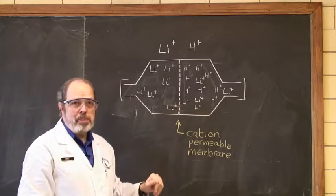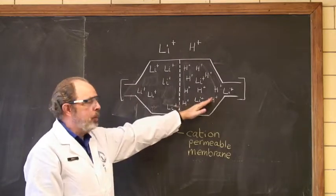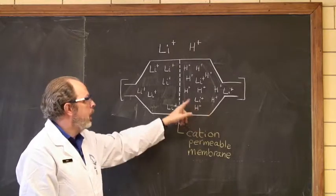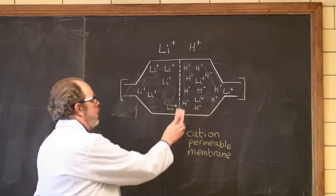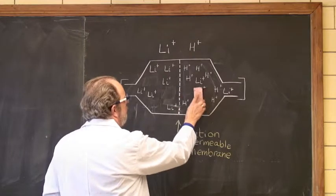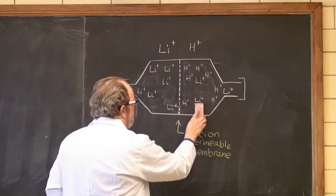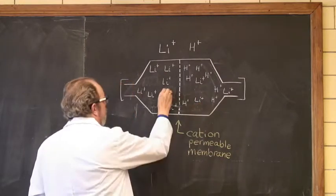Now that's a charge imbalance. You've got lots of more plus charges than negatives on this side. What will happen is the hydrogen ions will migrate in the opposite direction to maintain charge balance. We took three off. So there we are. And they will come over here.